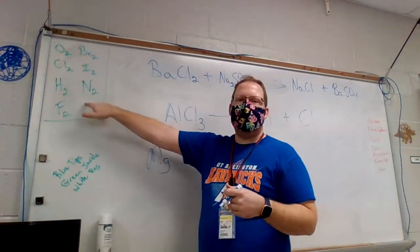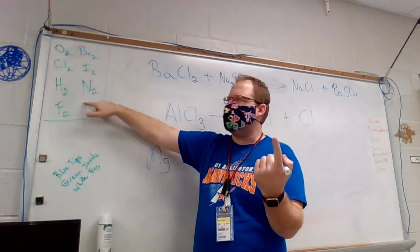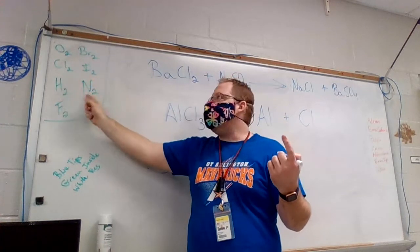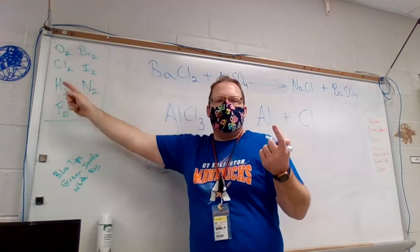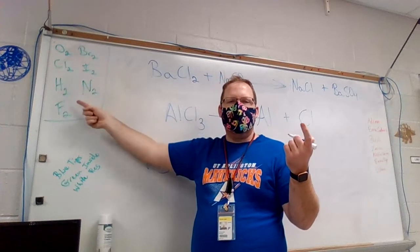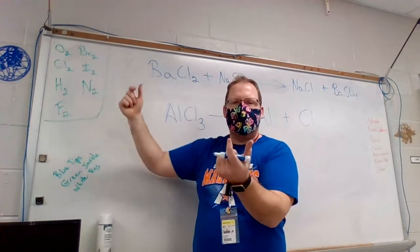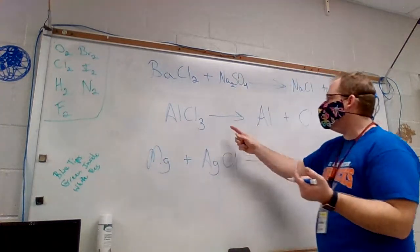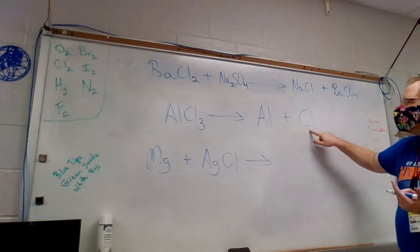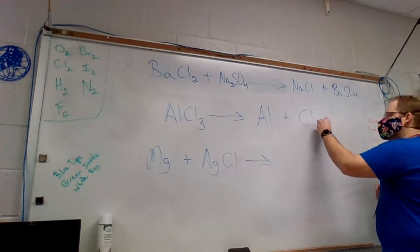The problem here is that chlorine is one of the seven elements that cannot exist by itself — it's never going to be just a single atom. It has to be Cl2. These elements — oxygen, hydrogen, chlorine, bromine, iodine, fluorine — all have to be paired up if they're on their own. So aluminum can be by itself, but chlorine has to be Cl2.